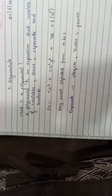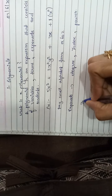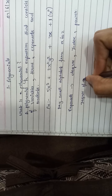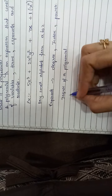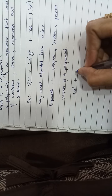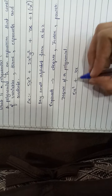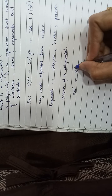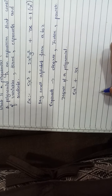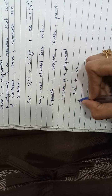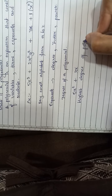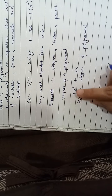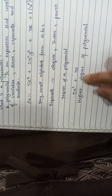Before moving further, let me explain the degree of a polynomial in a bit more detail. Taking another example: 5x square plus 3x. Your x degree is 2 and your x degree is 1. When they ask what is the degree of a polynomial, the degree of the polynomial is the highest degree. As you can see, 2 is the highest — so 2 is the degree of this polynomial.